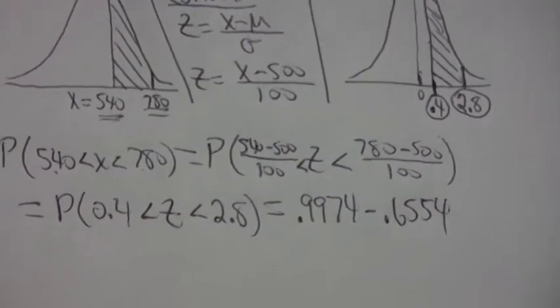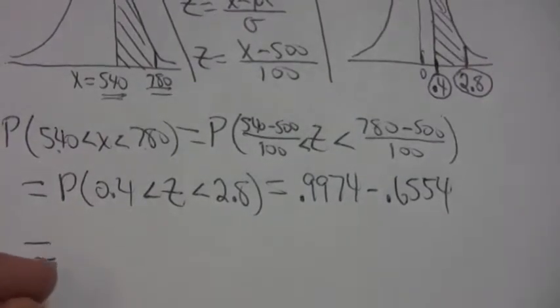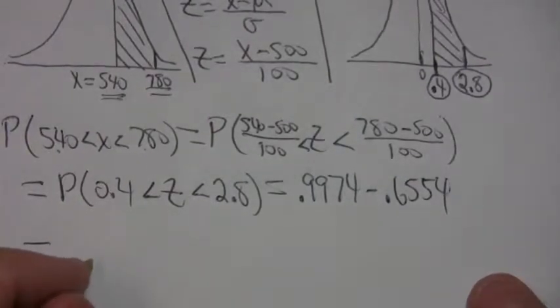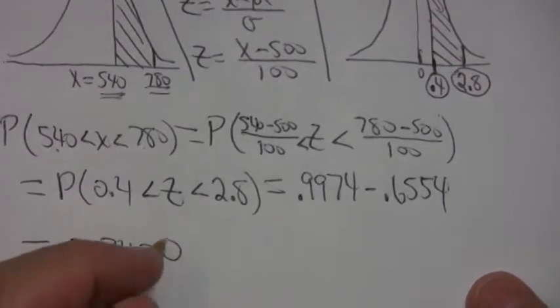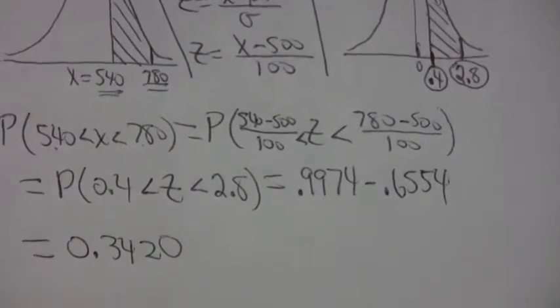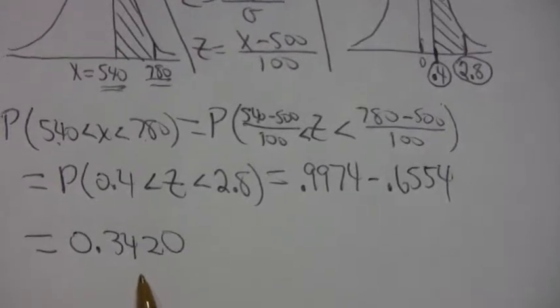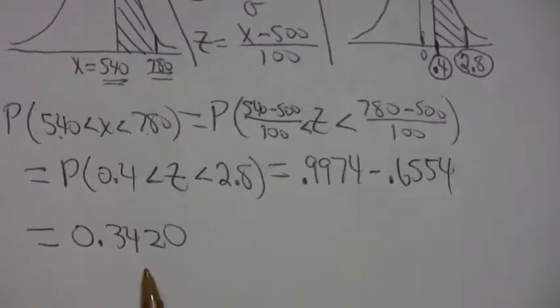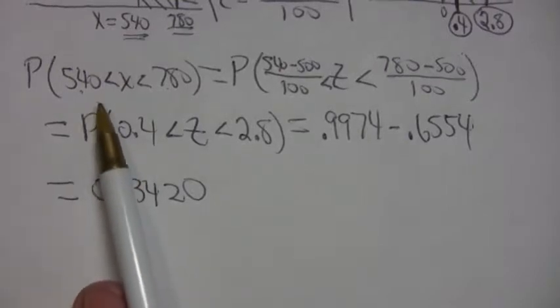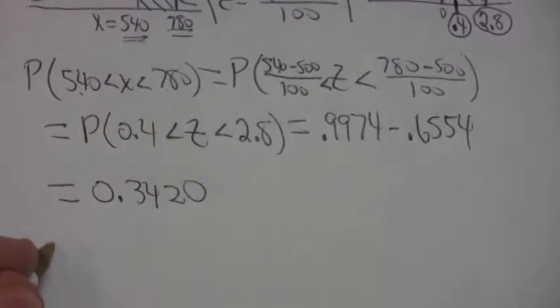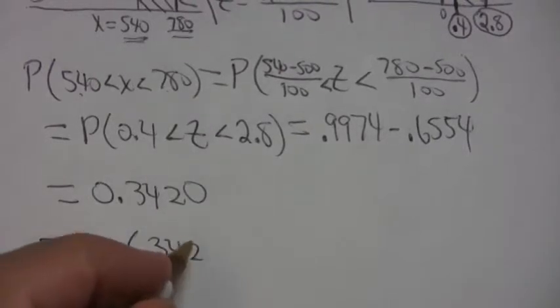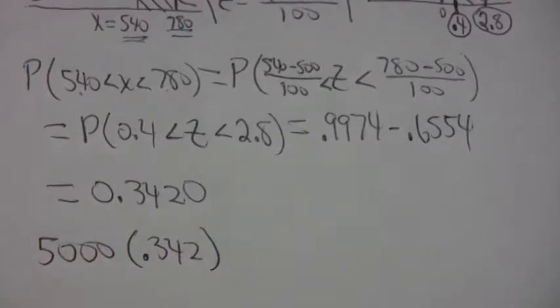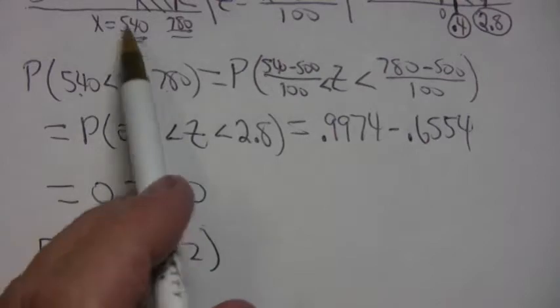And when you subtract those two numbers, you end up with 0.3420. So about 34.2% of these light bulbs should last between 540 and 780 hours. There are 5,000 bulbs. About 34.2% of them last within that interval.